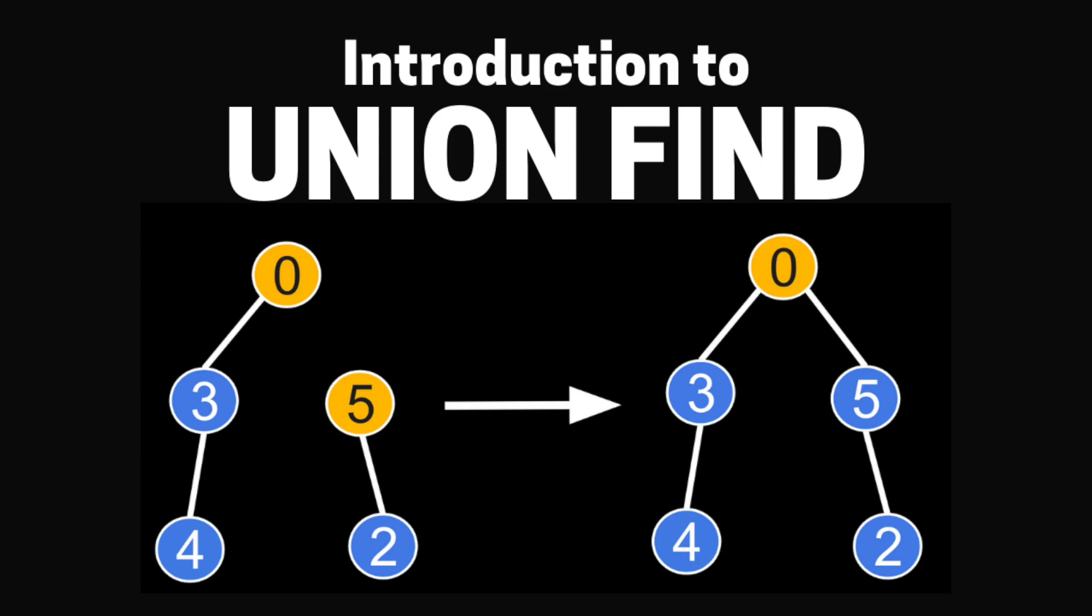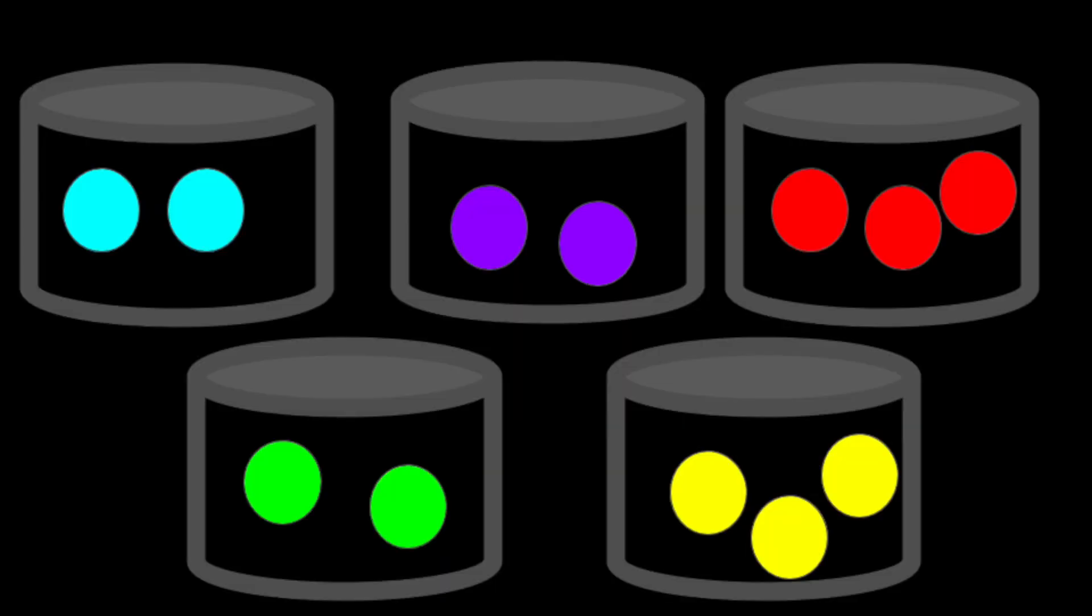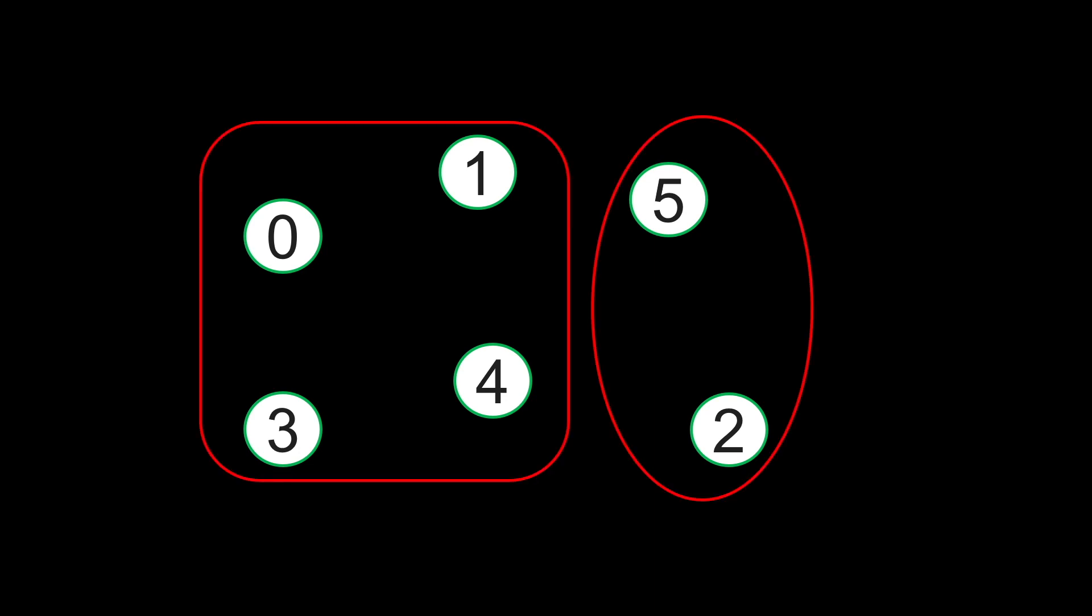So let's begin by talking about what union-find does. Imagine if you had some objects and you want to group them together according to some criteria. So one such grouping might be this.